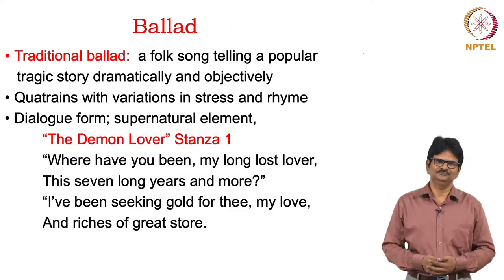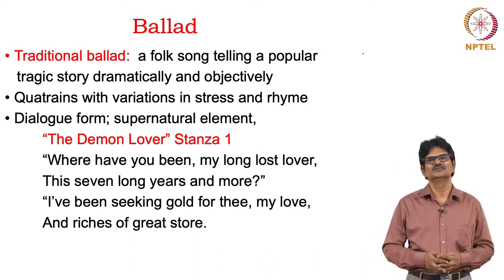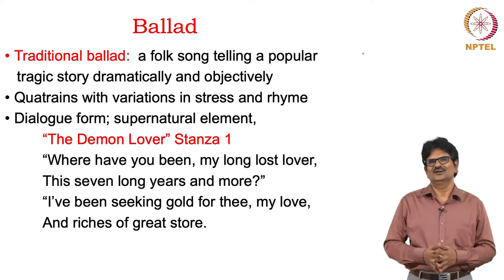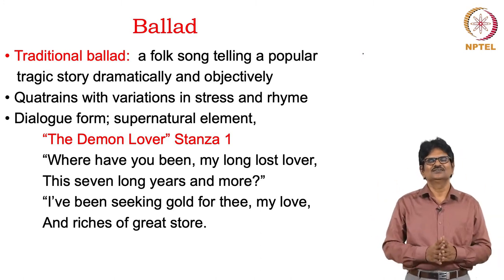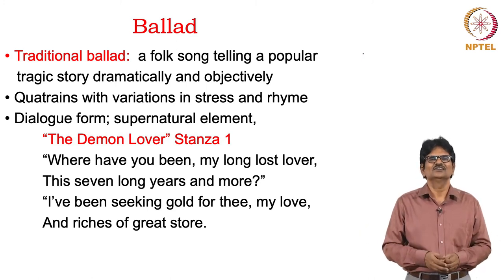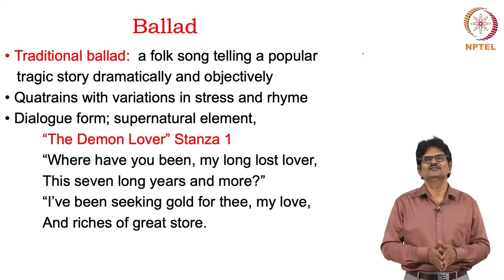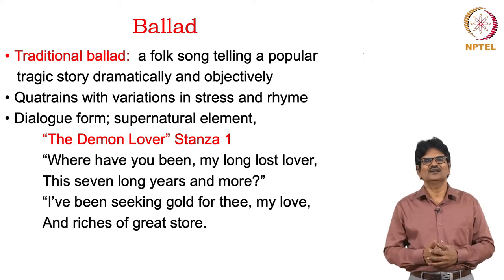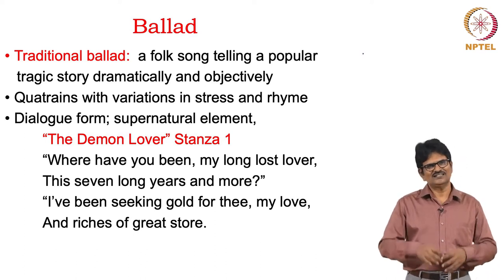Let's begin with ballad. Ballads are traditionally narrative poems. They are actually folk songs. They tell popular stories and usually they are tragic. There is a kind of drama and no subjectivity — all is told objectively. These poems have four lines in each of the stanzas, that's why they are called quatrains. Some variations will be there in stress and rhyme. Usually they appear in dialogue form with also some kind of supernatural element. One of the famous ballads in English is The Demon Lover. It has many versions.